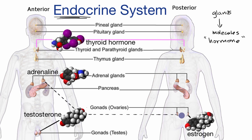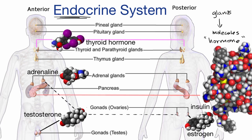In women, testosterone can also be produced by the ovaries. You could also have a molecule like insulin, which is much larger than the other hormones we've looked at. It's produced in the pancreas and plays a super important role in how we process sugars and how we store fat. Scientists are constantly discovering new roles for these various hormones. Insulin in particular you might associate with diabetes — people with type one diabetes aren't able to produce enough insulin to take sugar out of their bloodstream and have cells absorb the sugar.